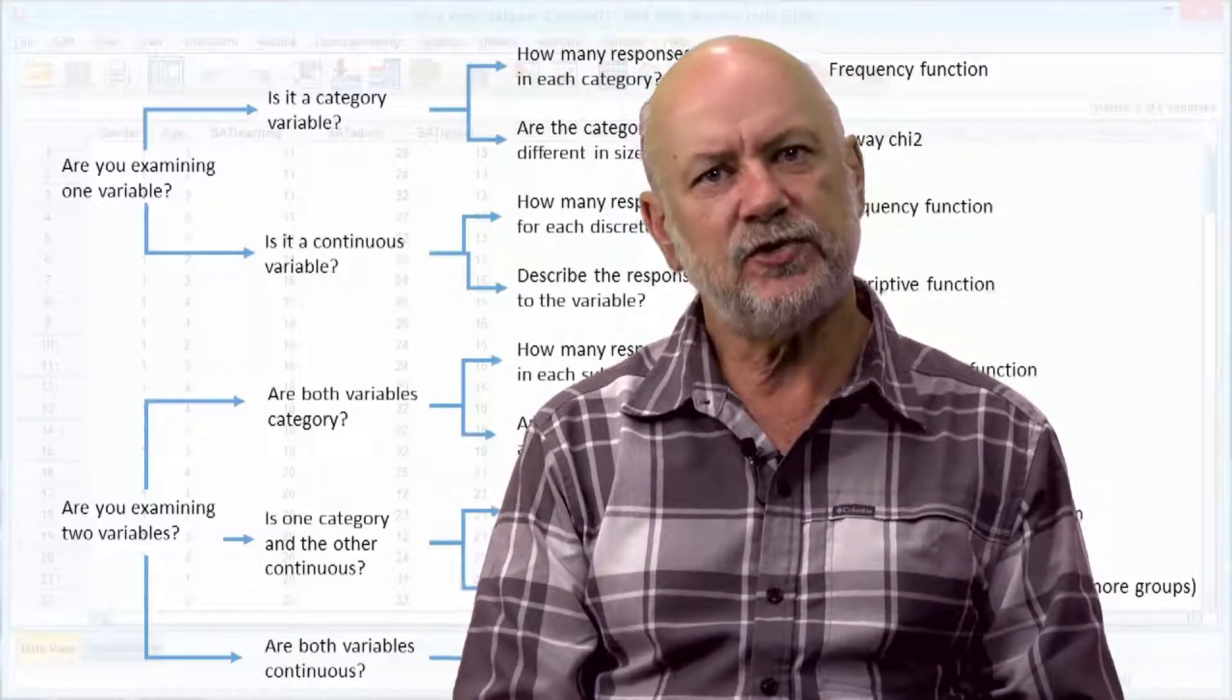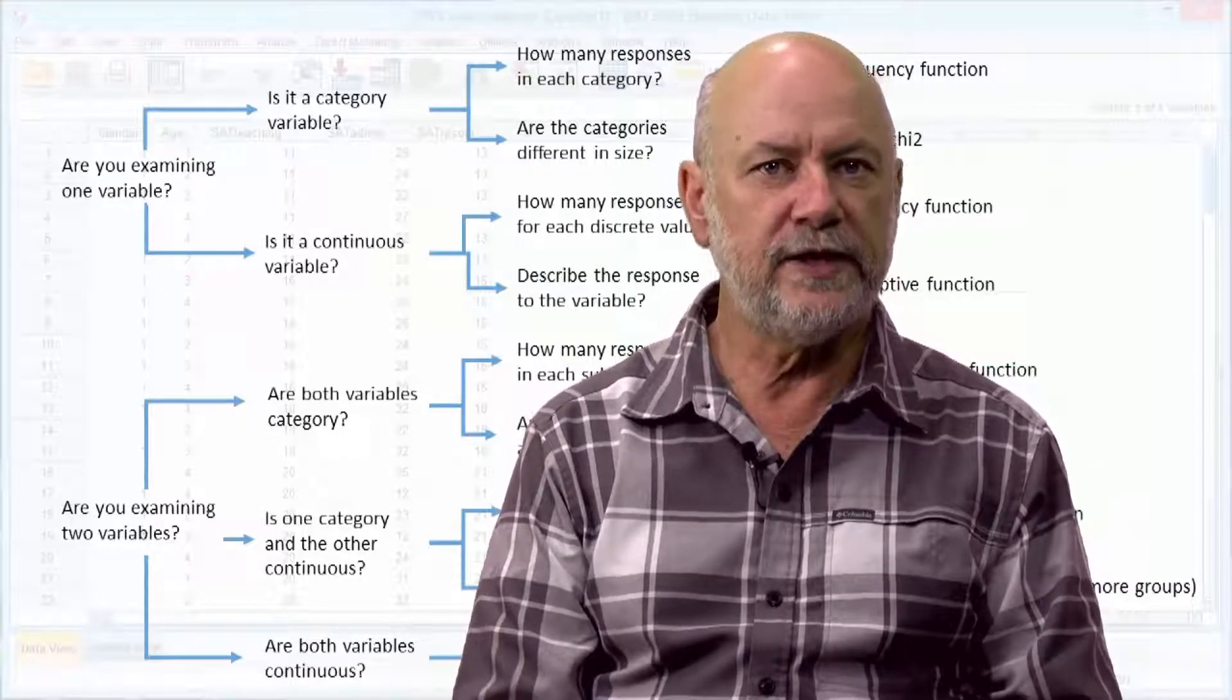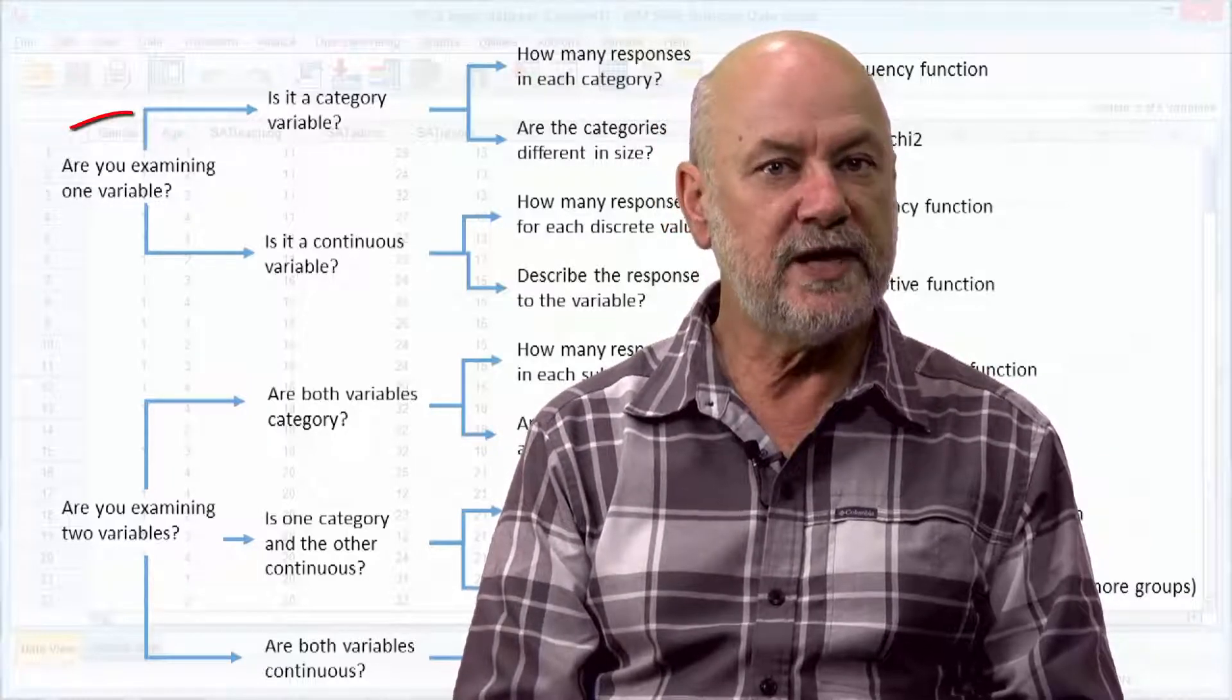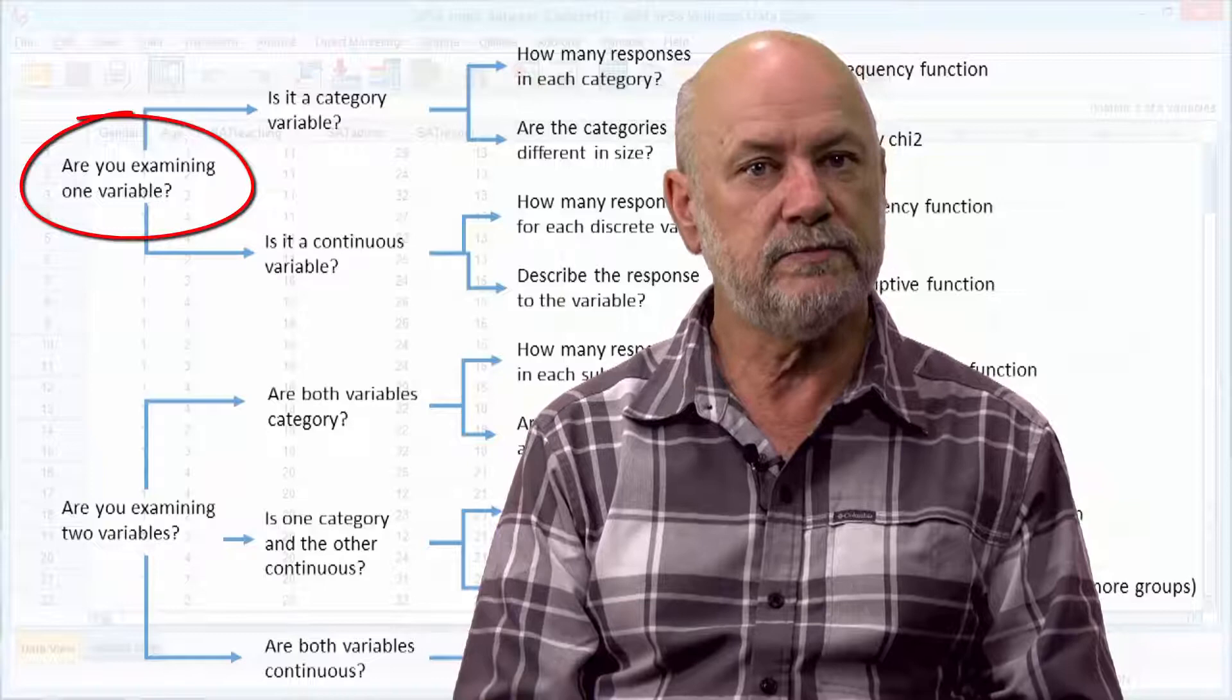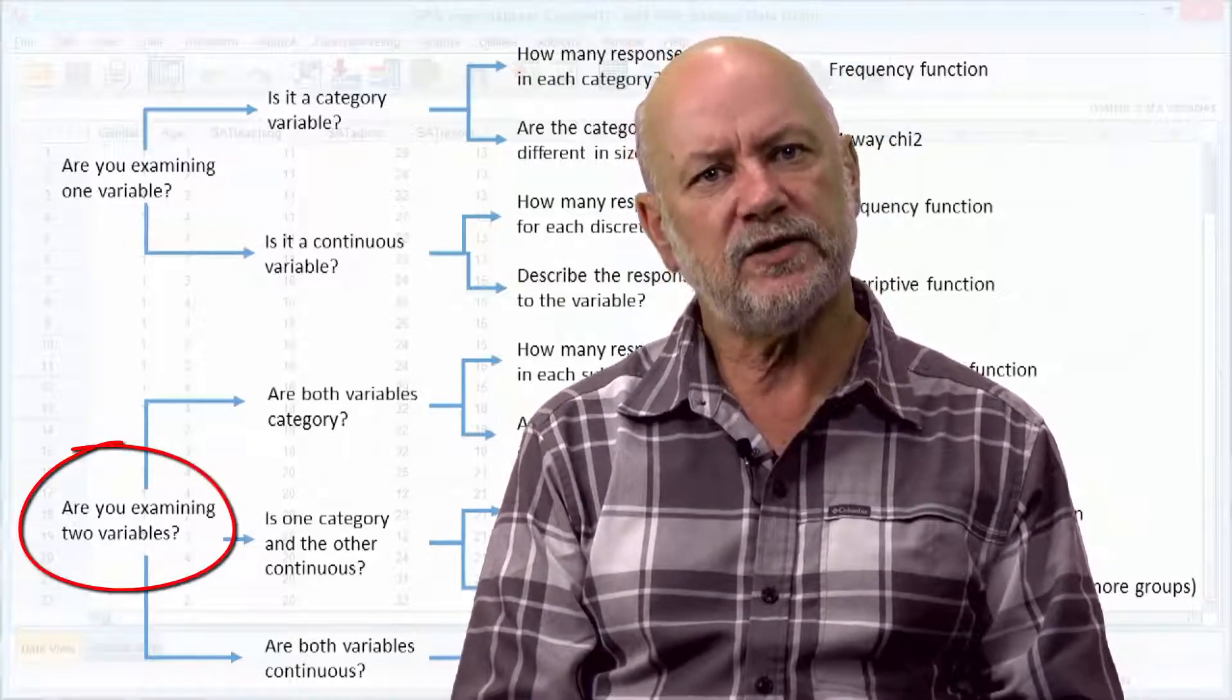In SPSS, we tend to treat each of the items or questions from our questionnaire or survey as a variable. The first decision we need to make is to decide whether we are examining just one variable all the time, such as gender, or are we examining how pairs of questions interact.